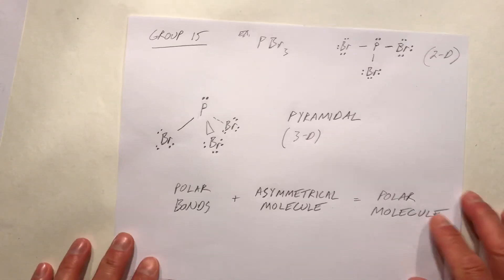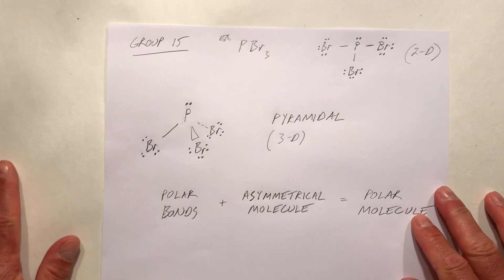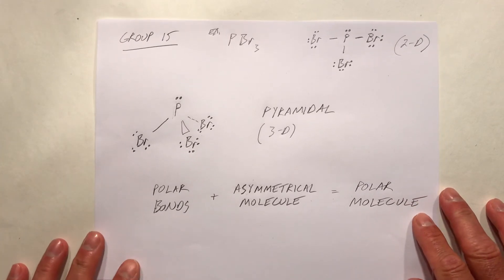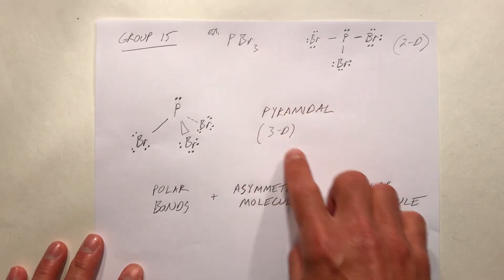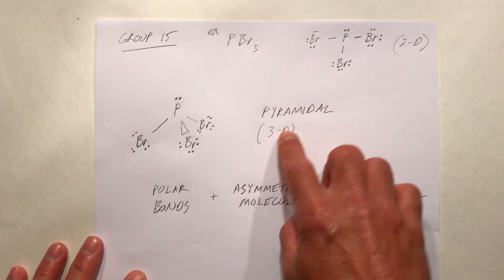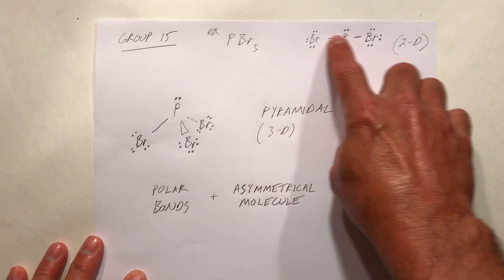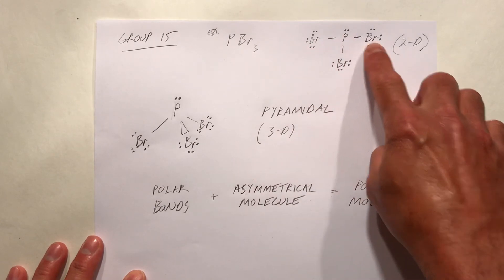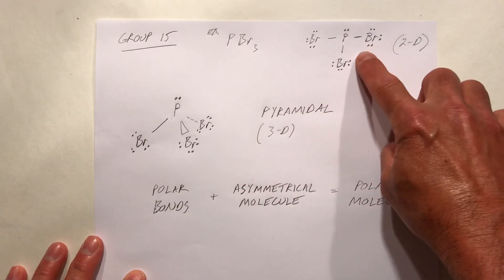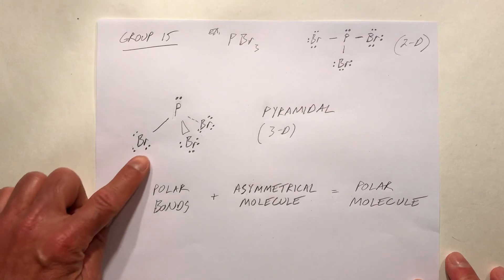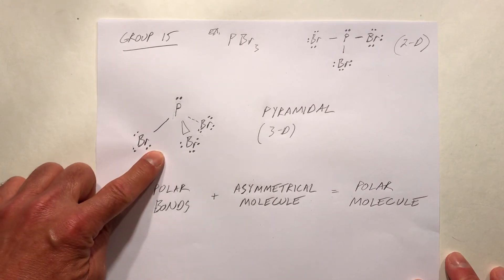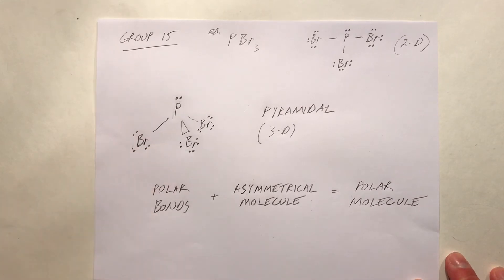For a group 15 element, PBr₃ — phosphorus bonded to three bromines. In two dimensions that's the Lewis structure, and in three dimensions it would look like this.